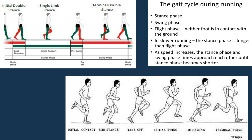Looking at the gait cycle, we're looking at both walking gait as well as running gait. The gait cycle starts from when one foot makes contact with the ground and ends when the same foot makes contact with the ground again. It can be divided into two distinct phases: the stance phase, where the foot is in contact with the ground, and the swing phase, during which the foot is not in contact with the ground.